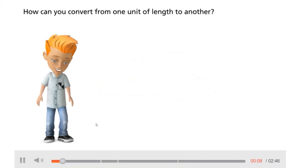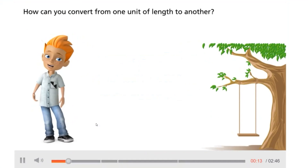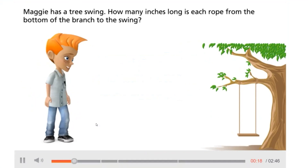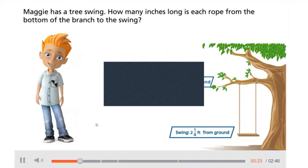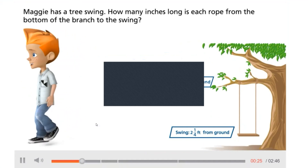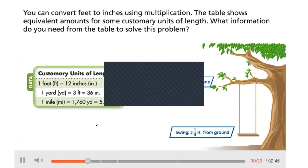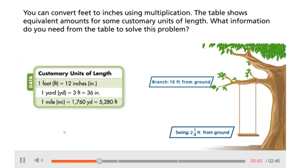How can you convert from one unit of length to another? Let's find out! Maggie has a tree swing. How many inches long is each rope from the bottom of the branch to the swing? You can convert feet to inches using multiplication. The table shows equivalent amounts for some customary units of length. What information do you need from the table to solve this problem? Select your answer.